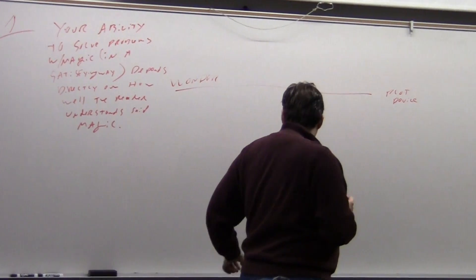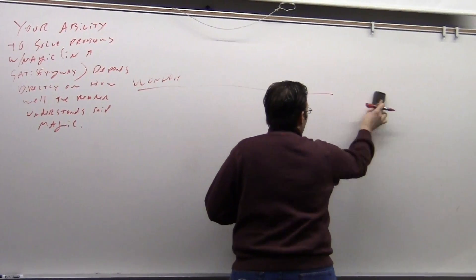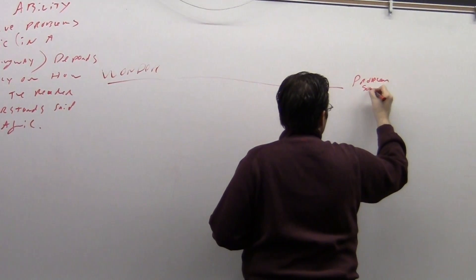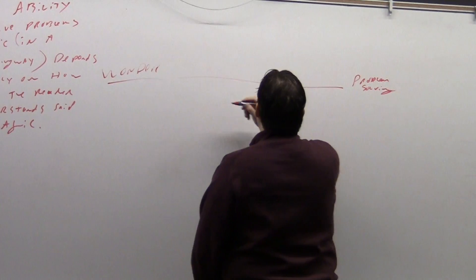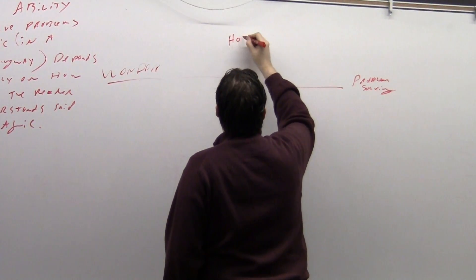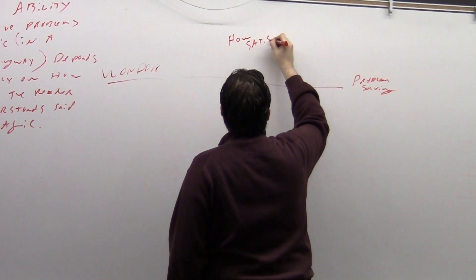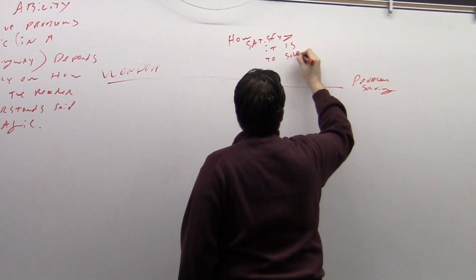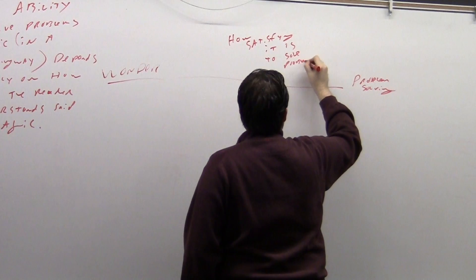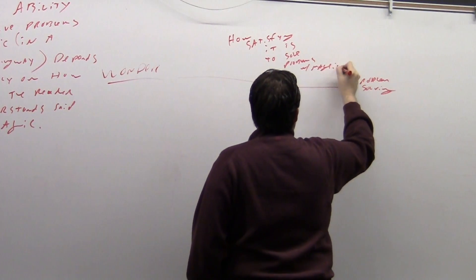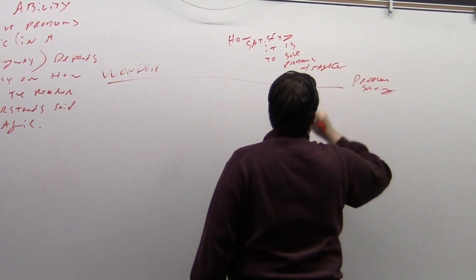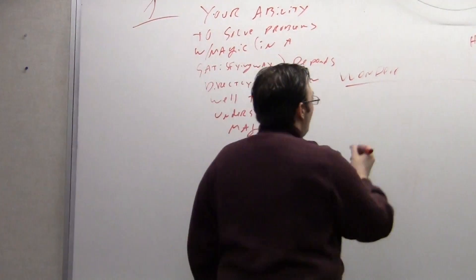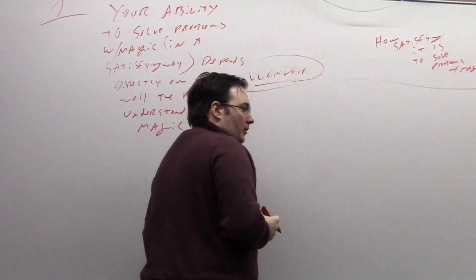So, you really solve problems with magic in a satisfying way depends directly on how well the reader understands said magic. What that means is, you've got really a slight scale between sense of wonder and problem solving. And this scale is how satisfying it is to solve problems. Magic.